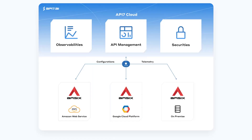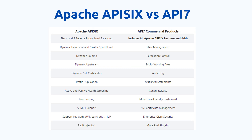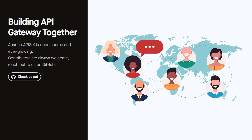API7 Cloud is a multi-cloud, multi-location SaaS platform for deploying, controlling, visualizing, and monitoring APIs at scale. You can run your APIs anywhere, but manage them in just one place. API7 includes all the APISIX features and offers more. If you would like to be a part of the growing global community, there's a developer guide you can check out. It's open-source, ever-evolving, and feel free to contribute.